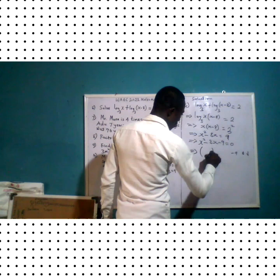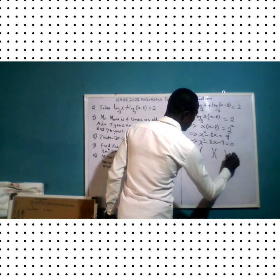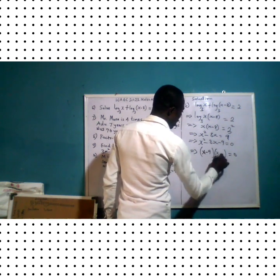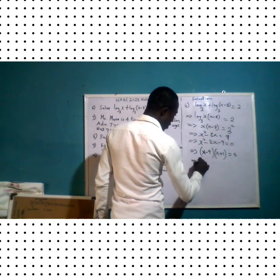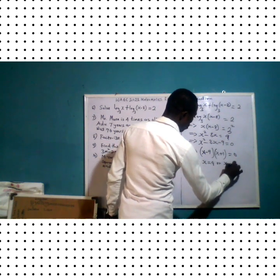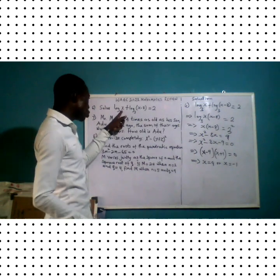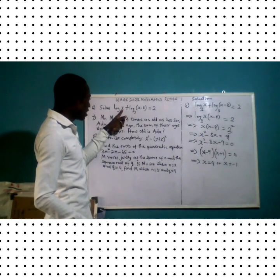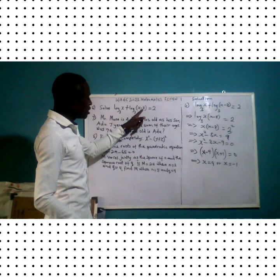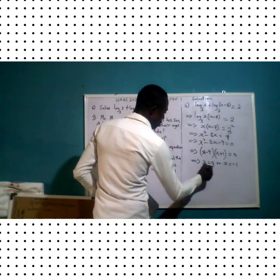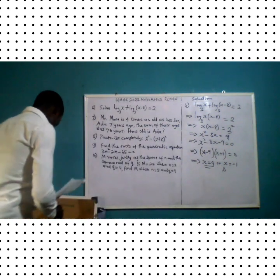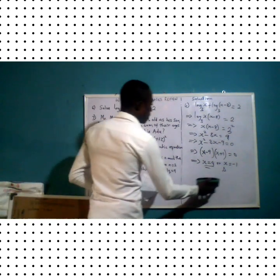Negative nine plus one gives negative eight, and negative nine times one gives negative nine. Putting down the two sets of brackets, we get x equals nine or x equals negative one. However, the domain requires x to be greater than zero, so we go with x equals nine. The correct option is option D.